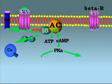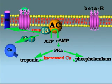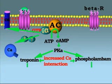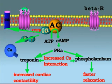Protein kinase A in turn activates troponin and phospholamban proteins so that they interact with calcium, resulting in increased force of contraction and faster relaxation.